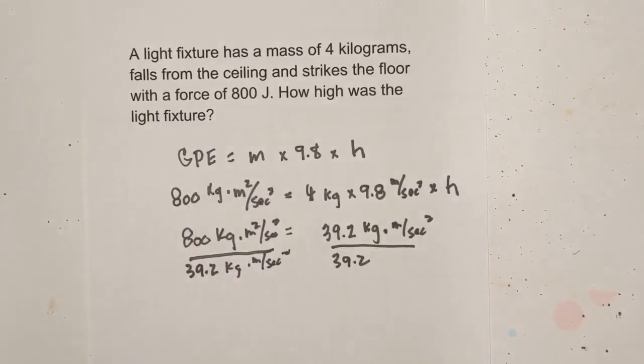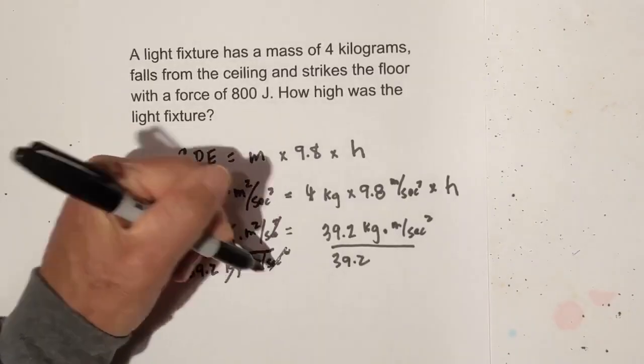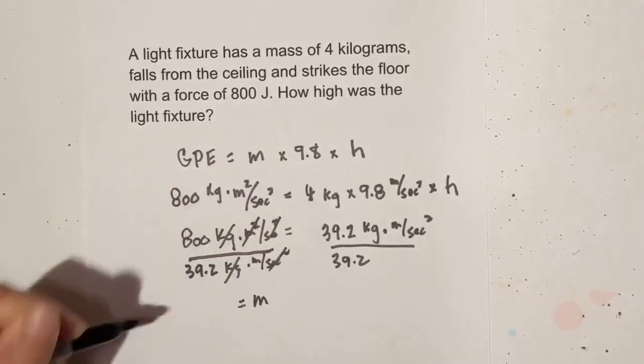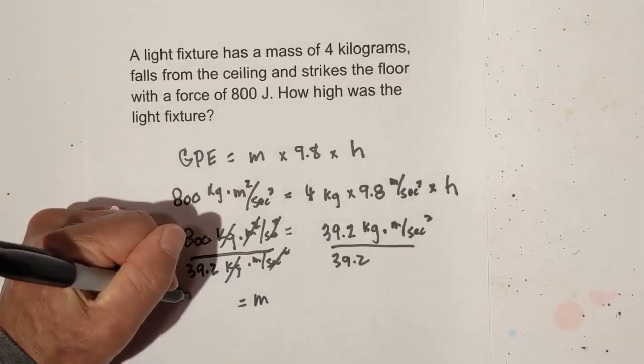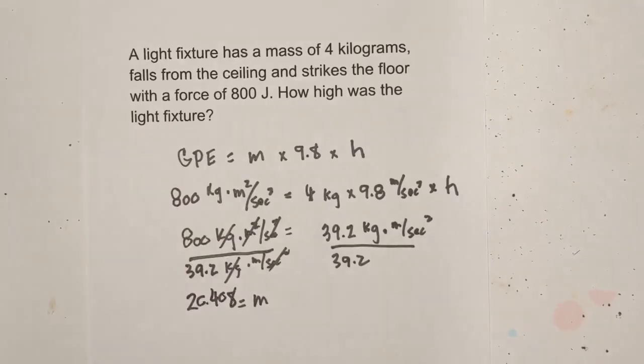Now let's see what cancels. First, with units, kilograms cancel, seconds squared cancel, and we're left with a meter. And then I've already done this ahead of time. If you take 800 and divide it by 39.2, it equals 20.408 meters.